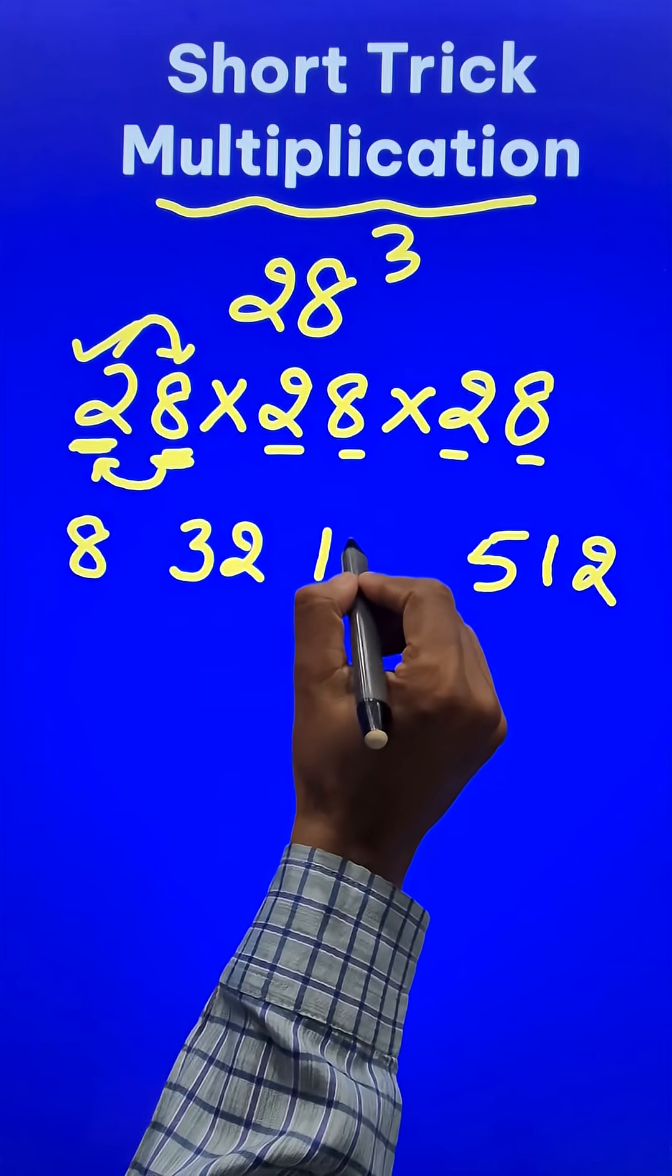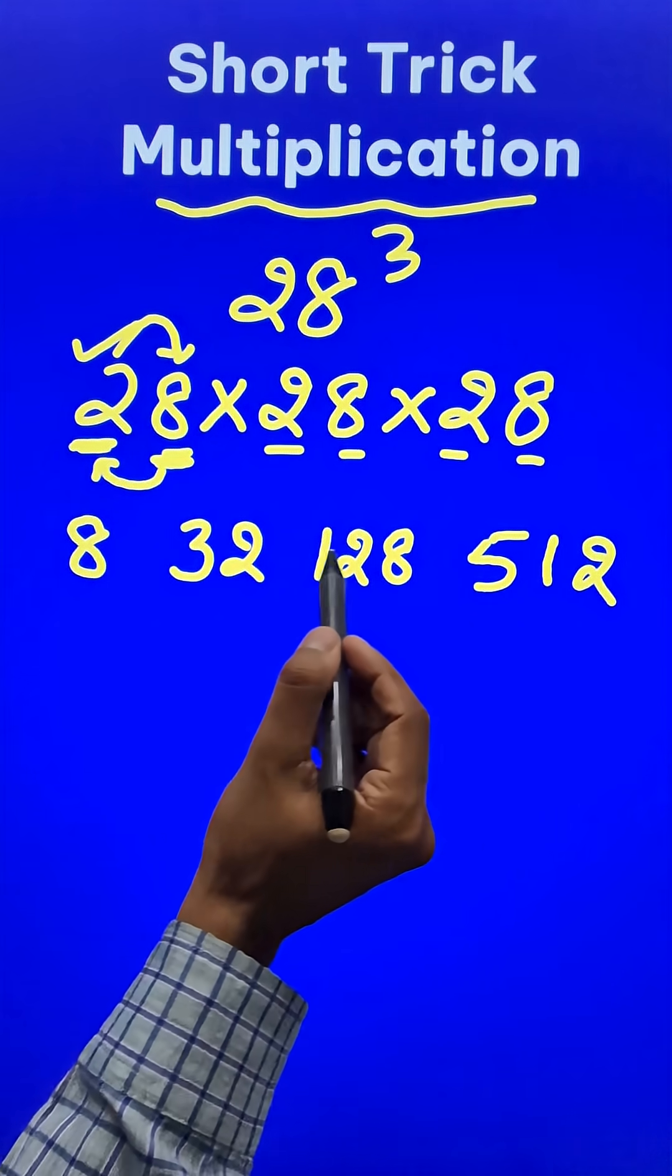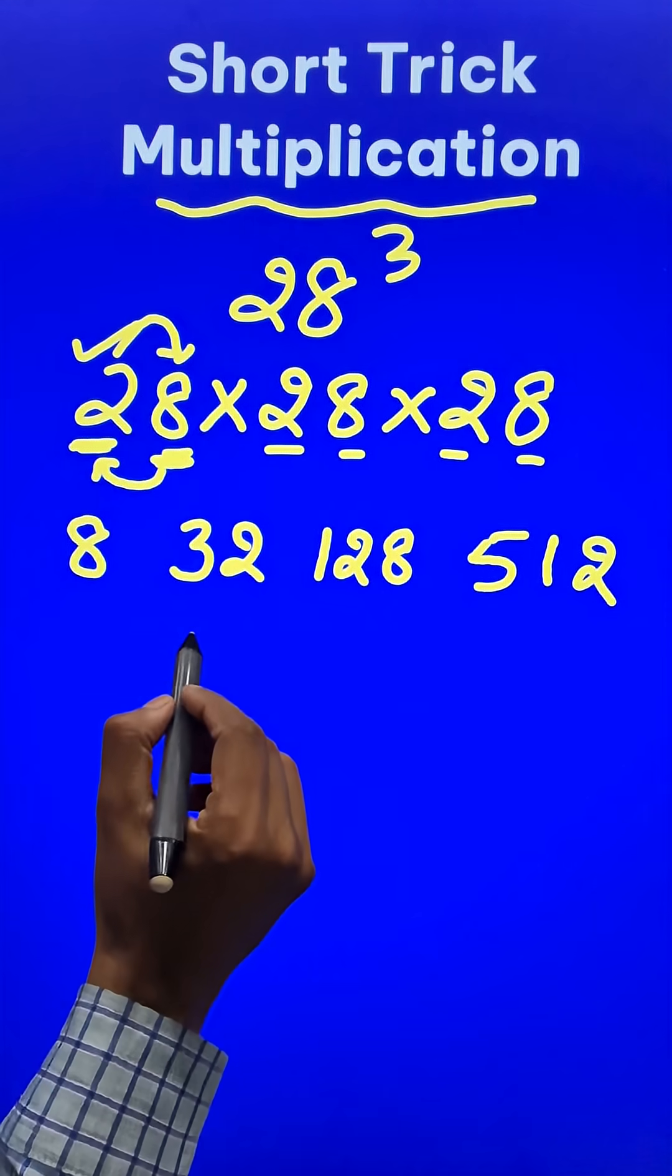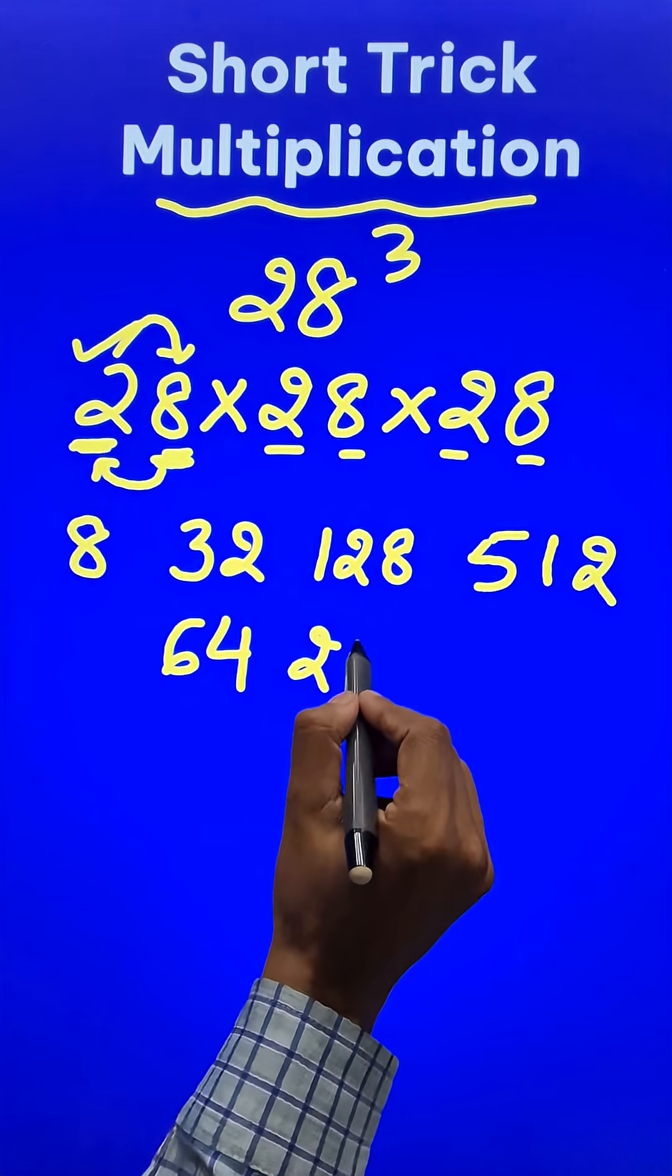Now the middle two numbers are to be doubled, so 32 becomes 64 and 128 becomes 256.